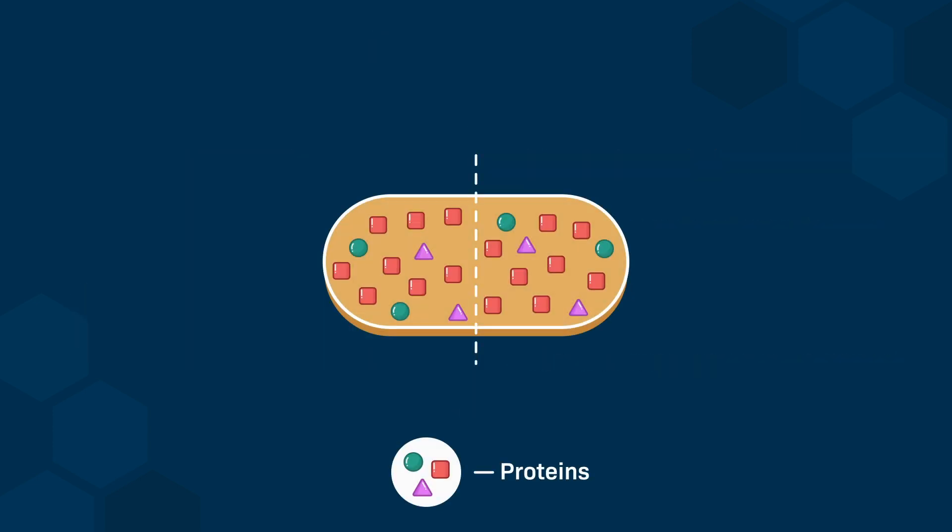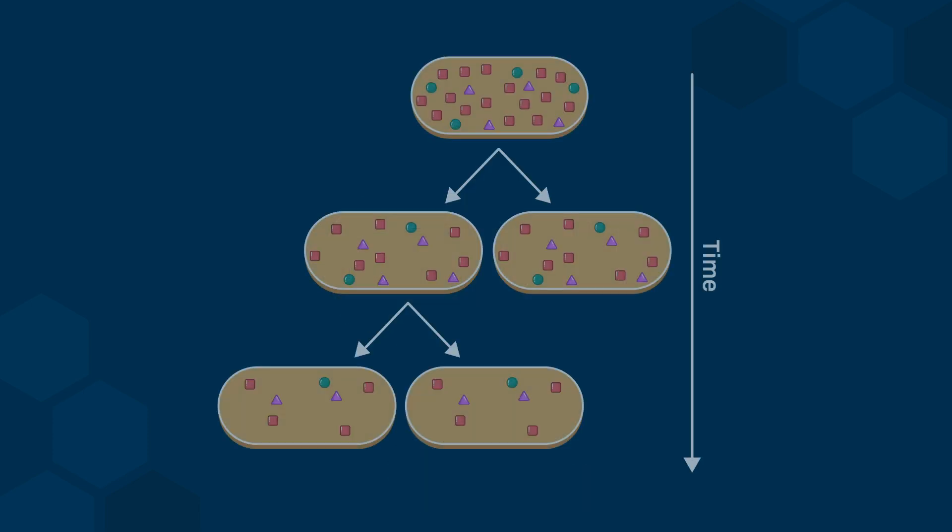The simple distribution of an existing set of essential proteins from a single parent cell between two resulting cells is not viable, because without new synthesis, the concentration of proteins in the cell would decrease by 50% each time the cell divides. This would result in cell death.